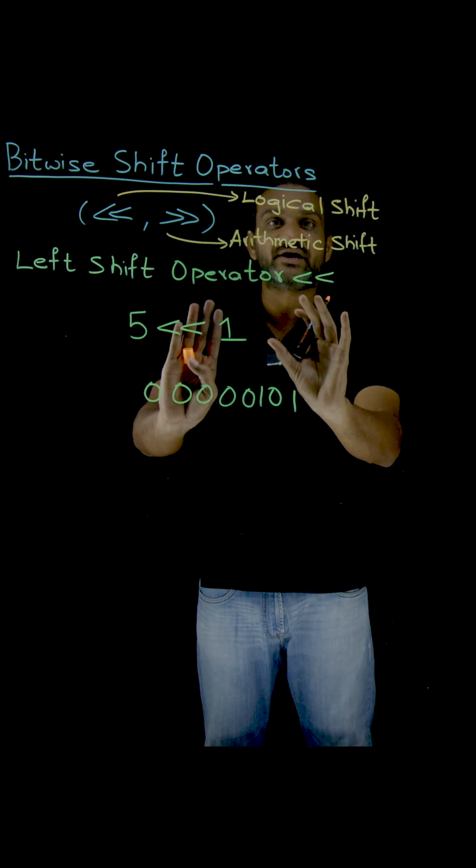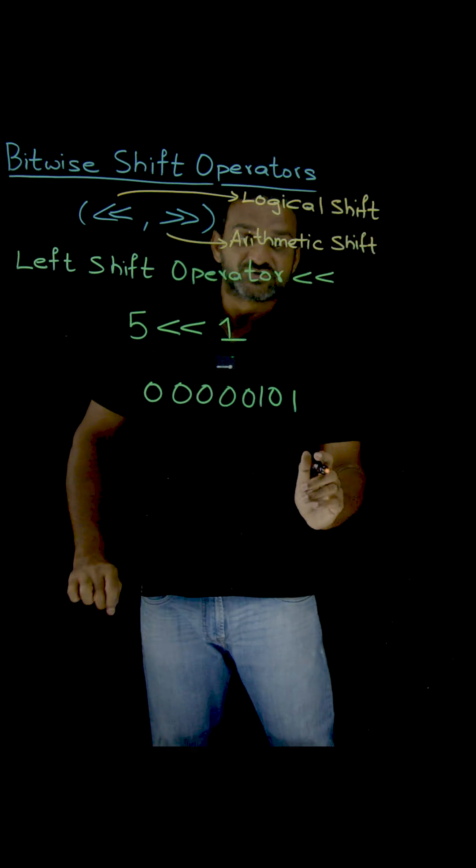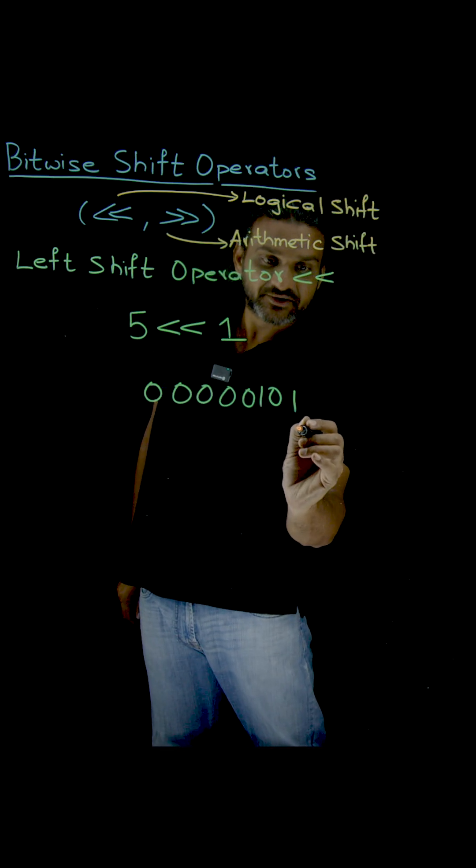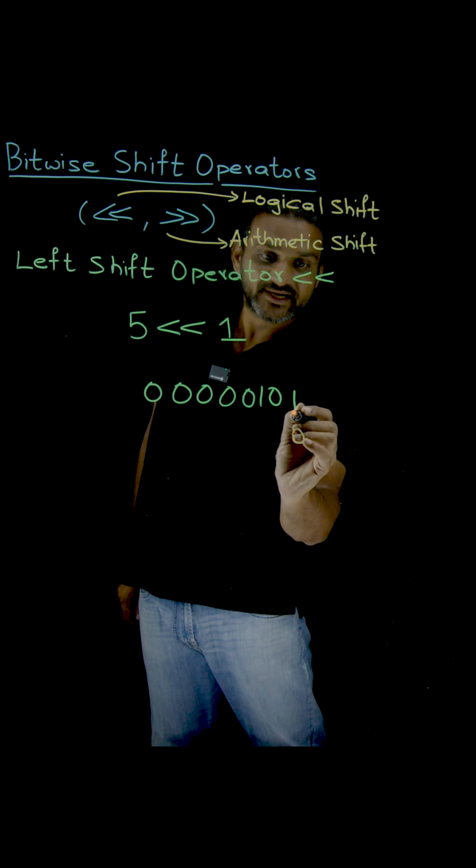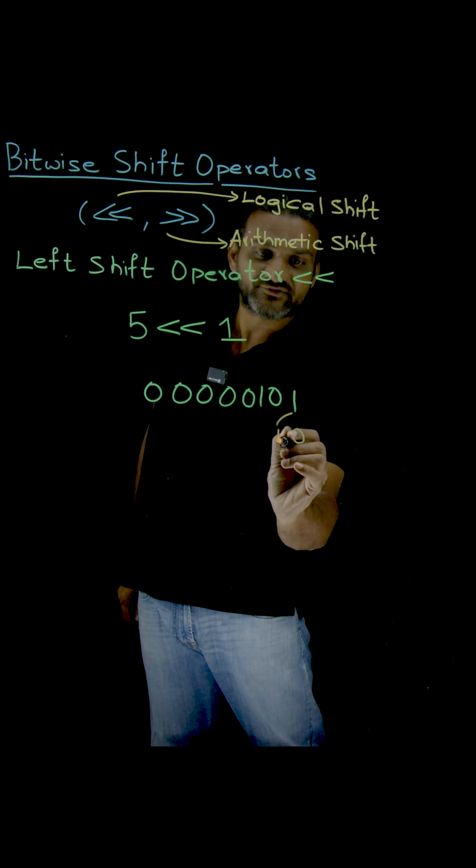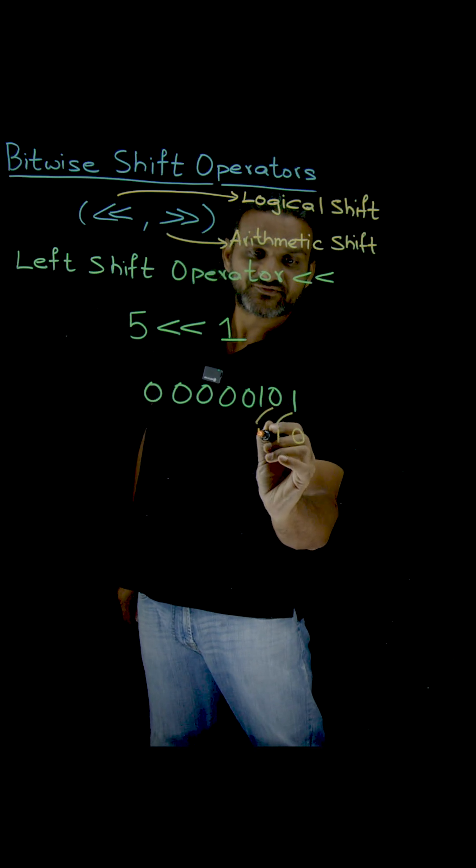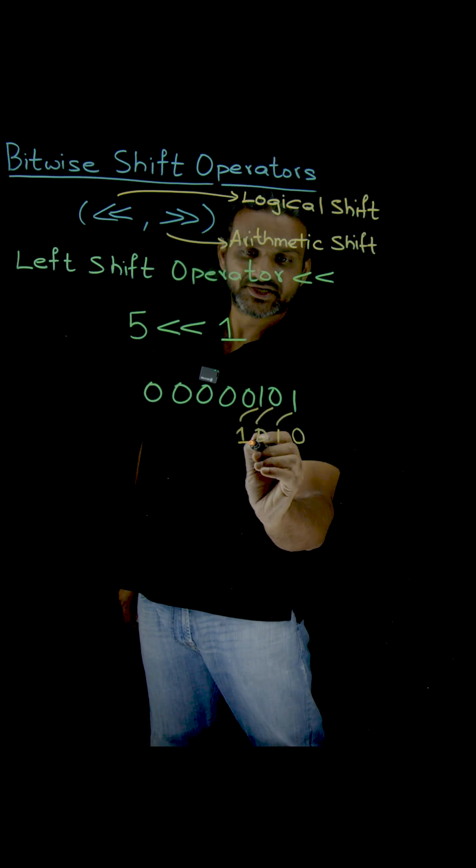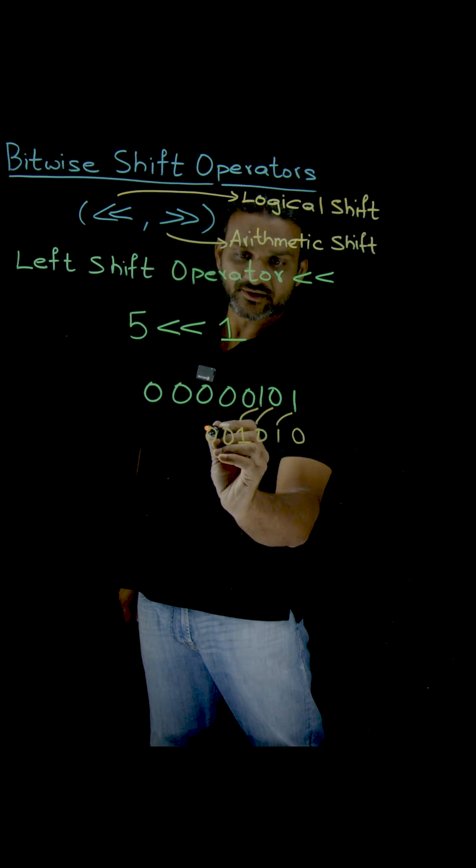How is this operation done? We will try to understand this first. What happens is this position will be covered by a 0, and this one will get shifted to the left. This one is shifted to the left, this one is shifted to the left, and so on.